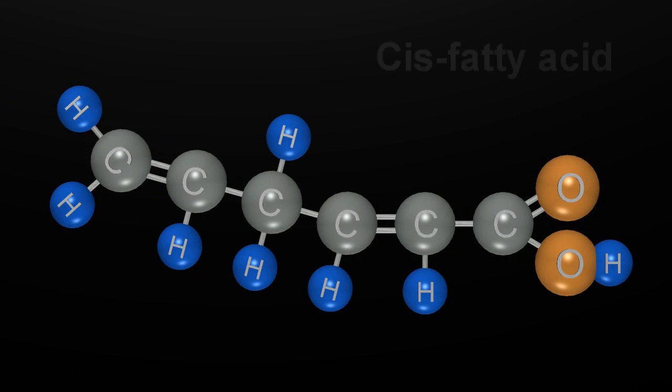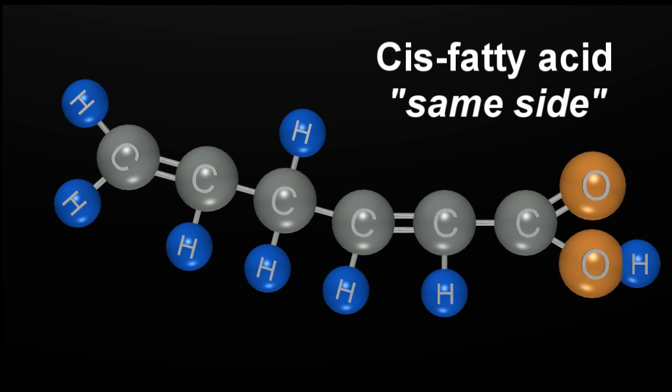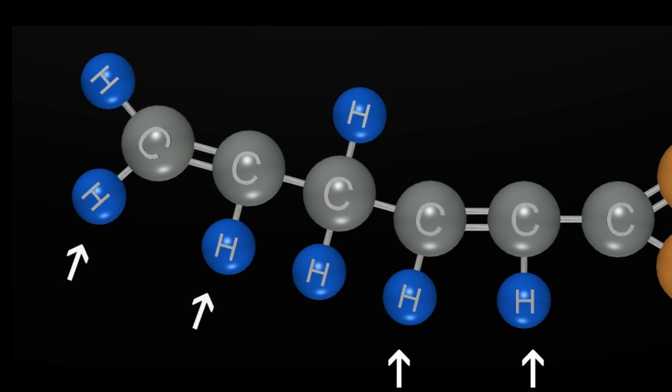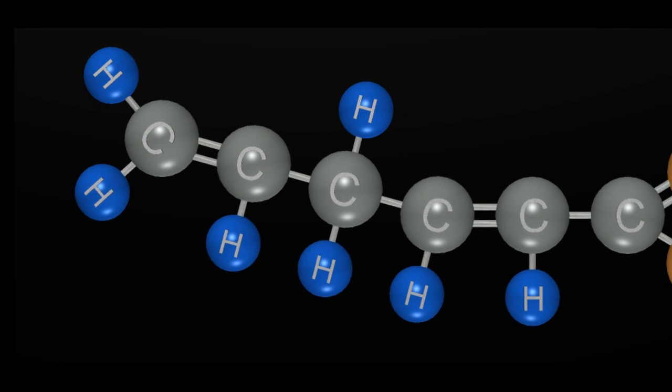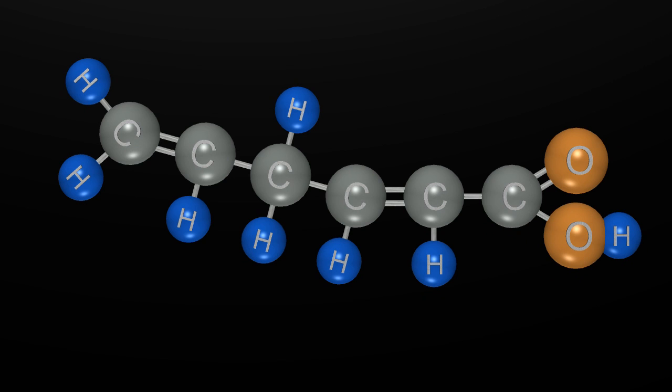The type of unsaturated fat that we just discussed is called a cis fatty acid. Cis is Latin for 'on the same side,' meaning that the two hydrogen atoms that remain across that double bond are on the same side of that carbon chain. Cis fatty acids are the fatty acids that generally occur in nature.